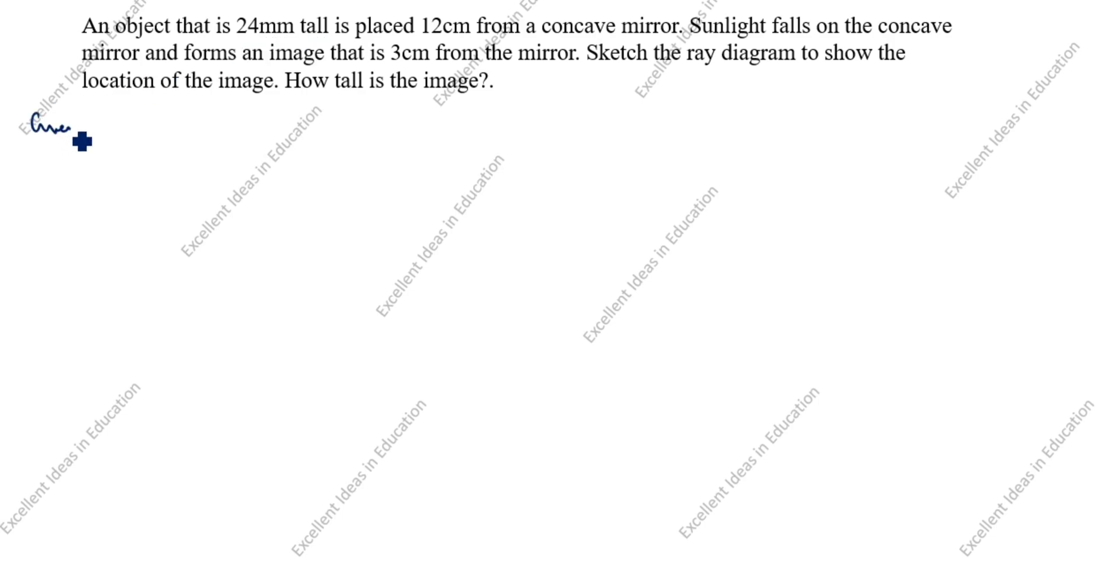What is given? Given data: HO is given. HO is always positive for lens and mirror, so 24 mm. The object is placed 12 cm from a concave mirror. Object distance is U. U is always negative for lens and mirror, so minus 12 cm.